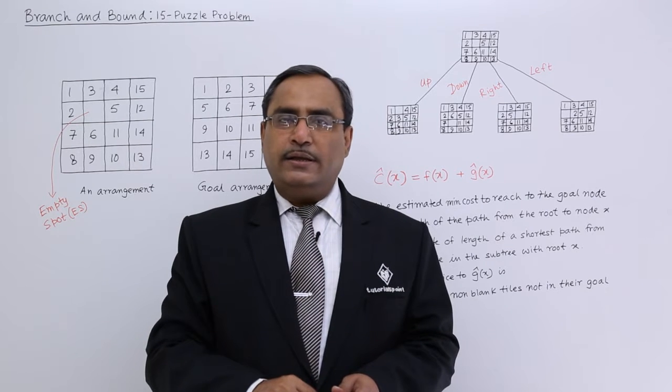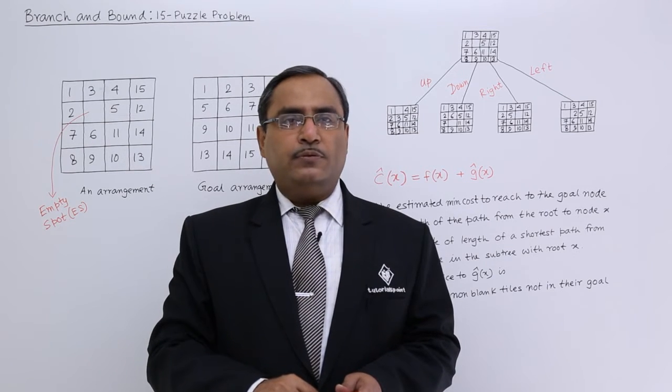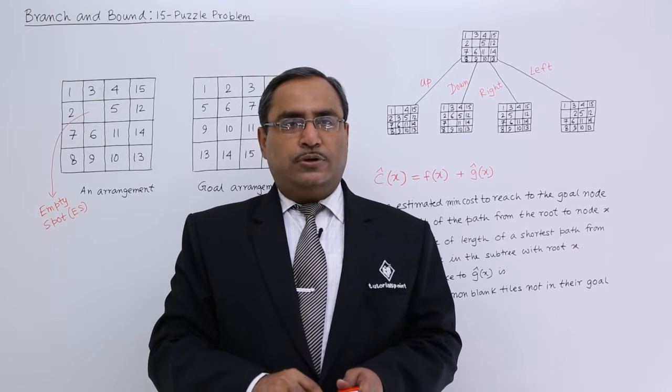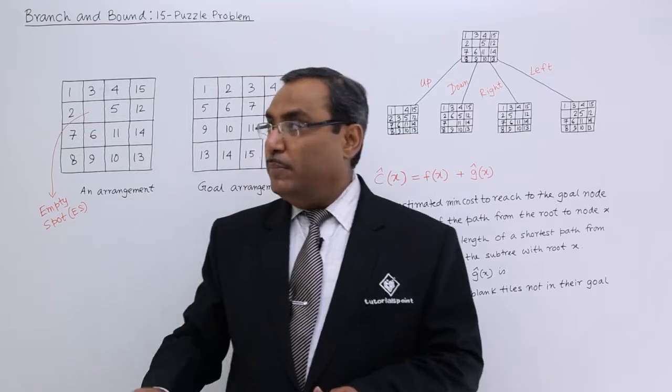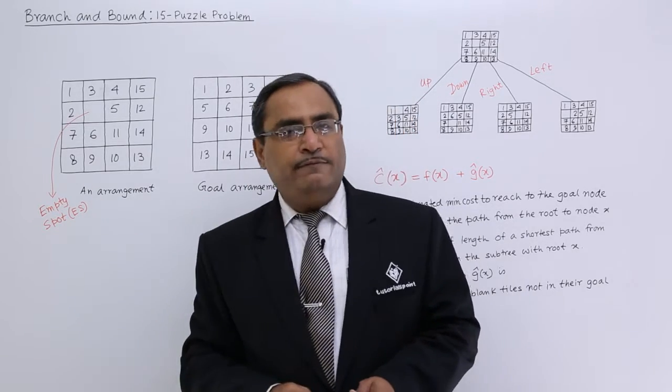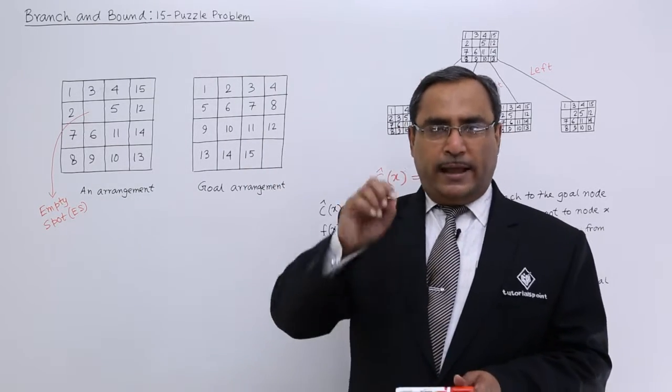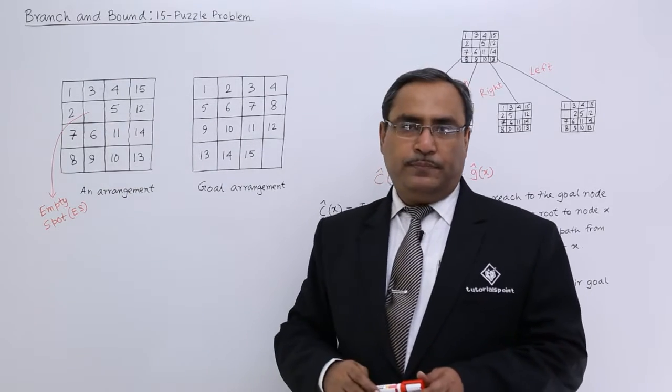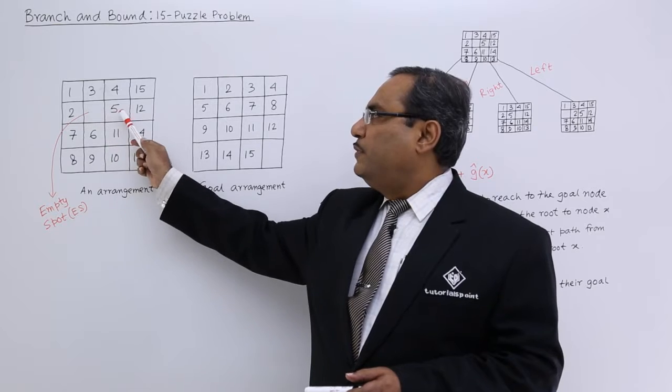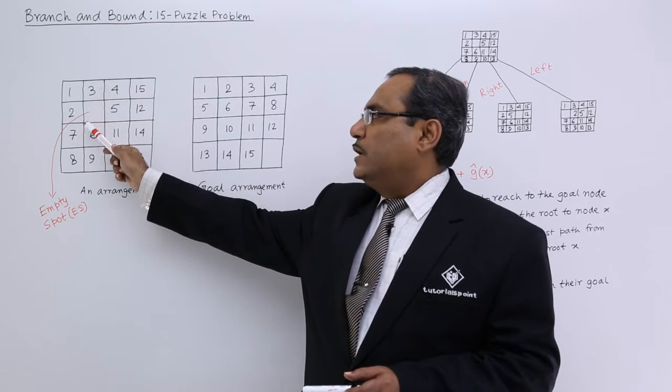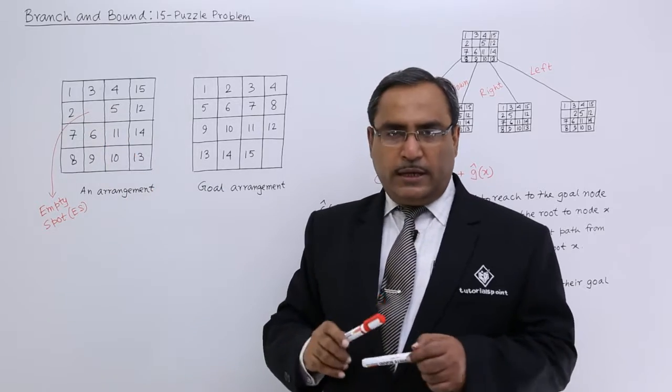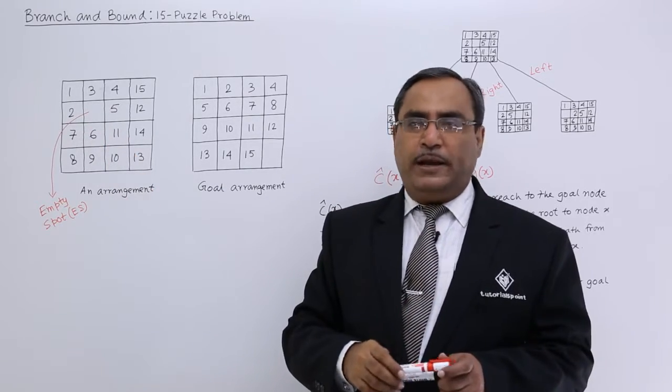In this session we are considering the 15 puzzle problem which falls in the algorithm category branch and bound. In case of the 15 puzzle problem, there are 15 tiles numbered from 1 to 15 and one empty spot. The empty spot can move left, right, up and down so that we can have different arrangements of this particular board condition.